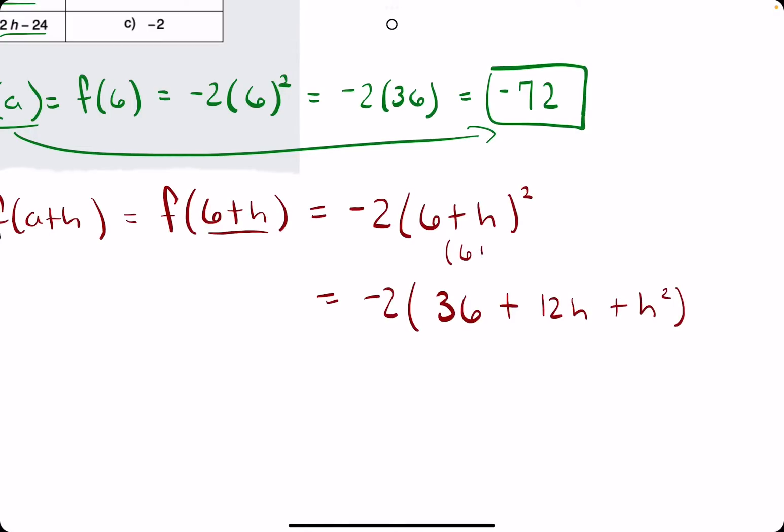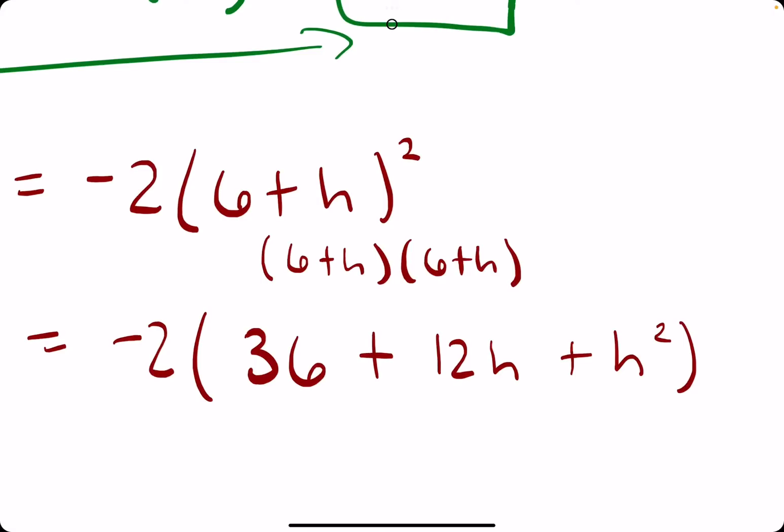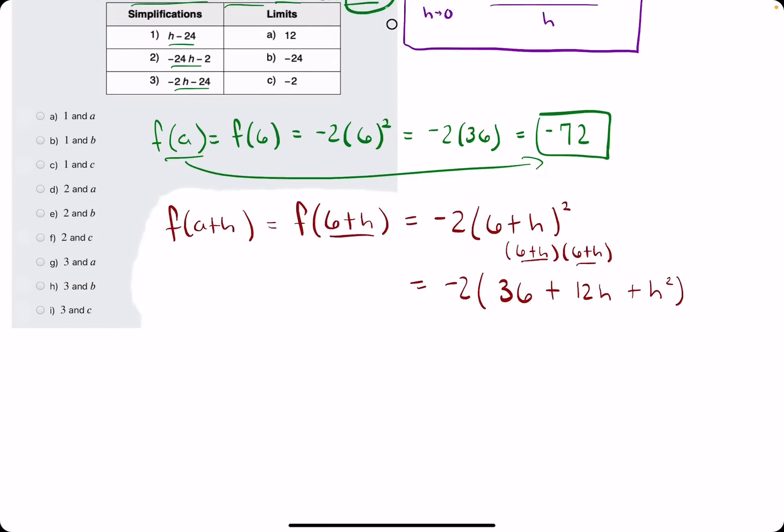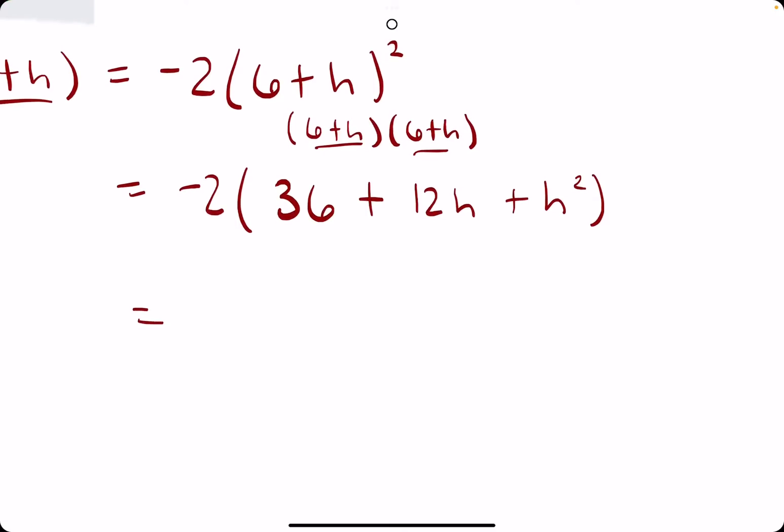And again, the idea is that this comes from expanding or foiling out 6 plus h times 6 plus h. And then the last step is just to distribute the negative 2 to these three terms.